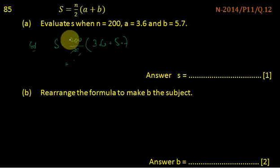So 200 divided by 2 equals 100, and we have 3.6 plus 5.7.